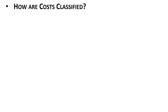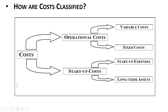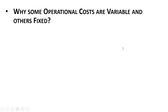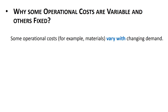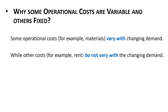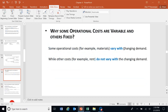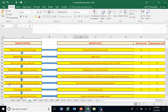Now we come to operational costs. These costs — like rent and materials — that repeat themselves are classified into variable costs and fixed costs. Some operational costs vary with changing demand while other costs do not. Let's look back at Chapter 3: our target demand was 20,000 units, with Year 1 at 80% (16,000), Year 2 at 90% (18,000), then steady state at 20,000.